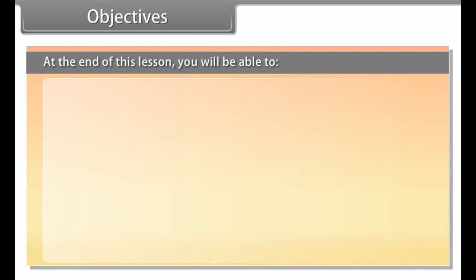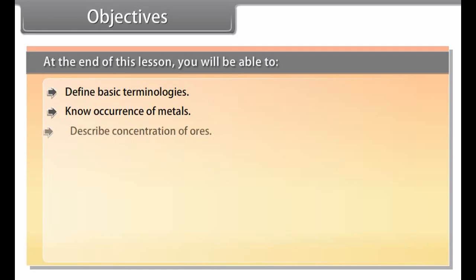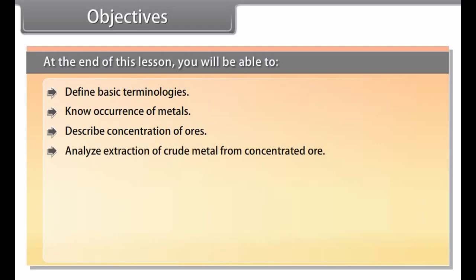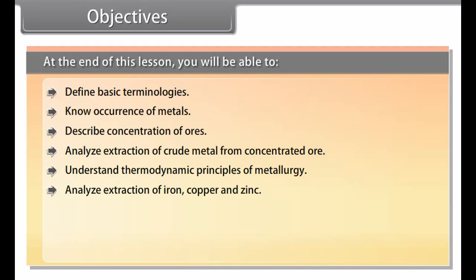Objectives. At the end of this lesson, you will be able to define basic terminologies, know occurrence of metals, describe concentration of ores, analyze extraction of crude metal from concentrated ore, understand thermodynamic principles of metallurgy, analyze extraction of iron, copper, zinc, understand electrochemical principles of metallurgy, describe refining, and know the application of aluminium, copper, zinc, and iron.